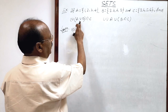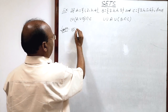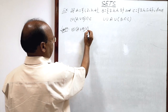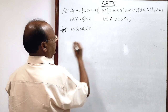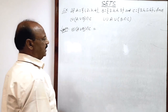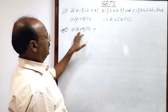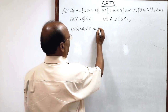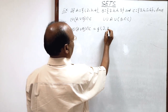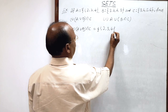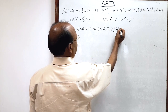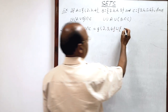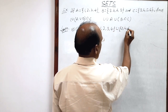Let us see the solution. First is (A∪B)∩C. We have to find A∪B first, then intersection with C. Let us write the sets: set A has elements {1, 2, 3, 4}, union set B having elements {2, 4, 6, 8}.